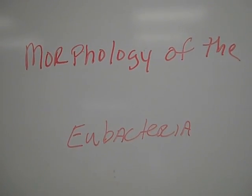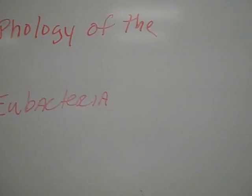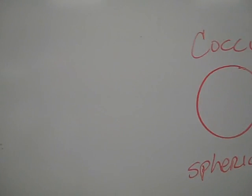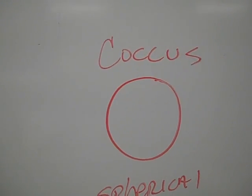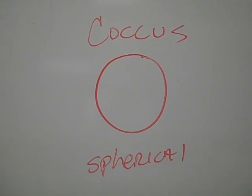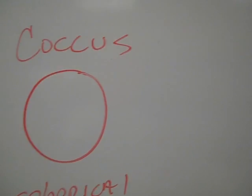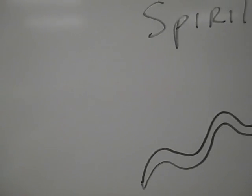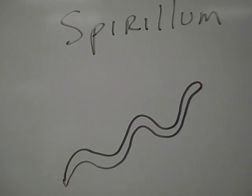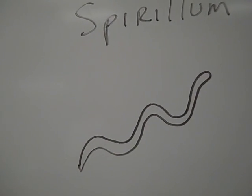The bacteria come in three distinct shapes. One, a coccus, which is spherical or round. A spirillum, which is curved, and if it's very thin, it's called a spirochete.